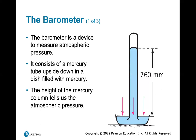Local weather expresses pressure in inches of mercury. Right now the air pressure is 30.1 inches. Converting: 30.1 inches times 25.4 millimeters per inch gives about 764.5 millimeters of mercury, which is a little higher than standard pressure of 760 millimeters.